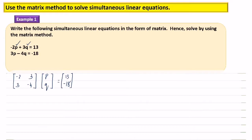Next step, you need to move this matrix to the right-hand side. So when we move the matrix with entries negative 2, 3, 3, negative 4, it will become the inverse matrix.